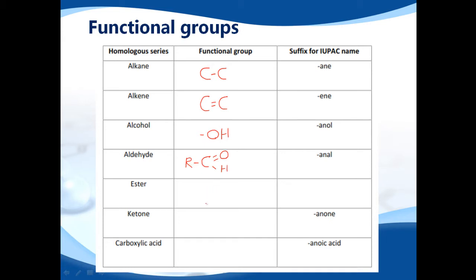Esters, we'll leave for another time. Now a ketone, it has a carbon to oxygen double bond here. But the carbon, which is connected to the oxygen, is joined to two other carbons. If you compare that one with an aldehyde, you have a carbon, oxygen, and hydrogen. Here we have a carbon, oxygen, and another carbon, and another carbon.